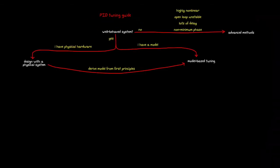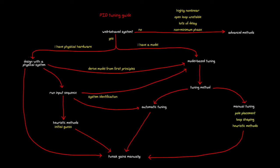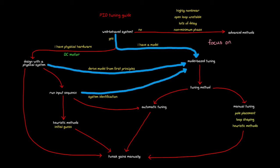In the last video, we walked through a PID tuning guide showing several different paths you could take to tune the PID gains for your system. In this video, we're going to demonstrate how you can accomplish some of these paths with a DC motor control example using MATLAB and Simulink. Specifically, this video is going to focus on getting over to this model-based tuning section of the flowchart.